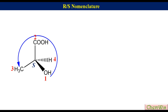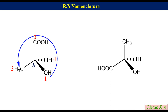Let's have lactic acid represented by a perspective formula like this. Repeat the steps to find out the configuration. First label the groups attached to the chiral center according to their priorities as 1, 2, 3, and 4. The fourth priority group is on a hatched wedge, so there is no need for interchange. Draw an arrow from 1 to 3 via 2. Since the direction of the arrow is clockwise, the configuration will be R.